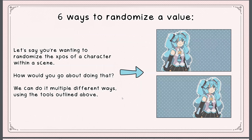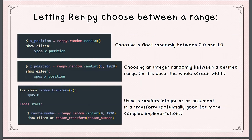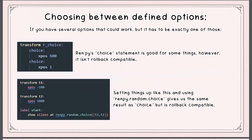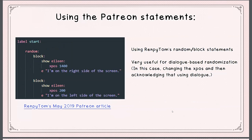Let's say we're wanting to randomize the position of a character within a scene. We can let Ren'Py choose a float between 0.0 and 1.0, or choose an integer randomly between a defined range — in this case the whole screen width, though you can change that — and then use an integer as an argument in a transform for more complex implementations. We also have choosing between several defined options. The renpy.random.choice is rollback compatible, unlike the basic choice statement, so you can have transforms defined and then use renpy.random.choice between them.